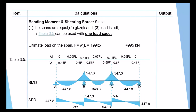Now we proceed to design. For longitudinal reinforcement, sections at mid-span have the flange in compression, so they are designed as flanged (T) sections. Sections above the supports have the flange in tension, so they are neglected and designed as rectangular sections. For shear, we will go through all values but focus on one or two in detail to avoid making the video too long, since the rest is repetition at different values.